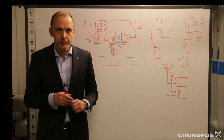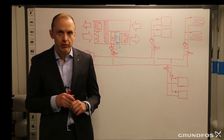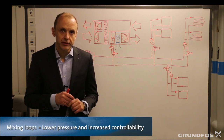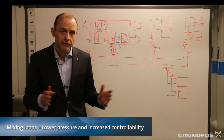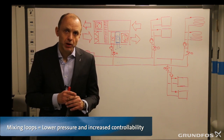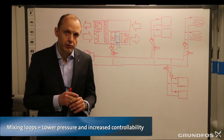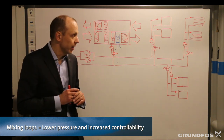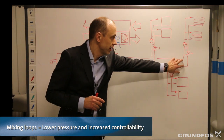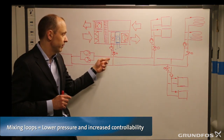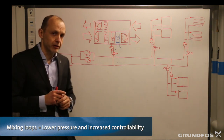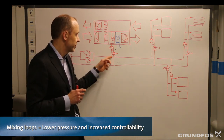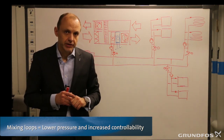By introducing mixing loops in this system, we are able to reduce the main pump size and also the pressure provided by the main pumps. That means we are able to reduce the differential pressure in the system as well. One of the typical problems with HVAC systems is too high differential pressure close to the pumps, because pumps are designed to maintain constant differential pressure at the furthest point. By using smaller pumps providing less pressure, we reduce the delta P close to the pumps, which gives better controllability of the system.